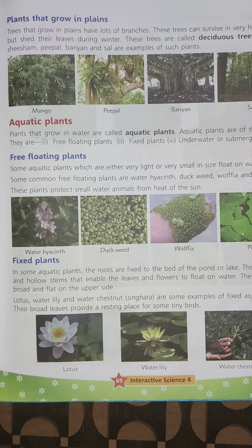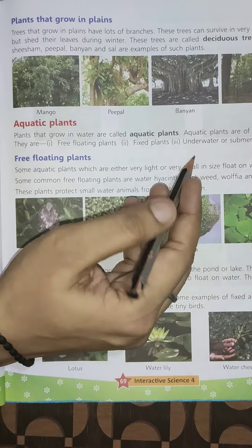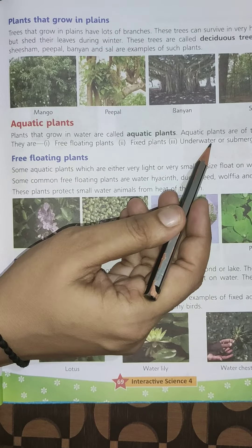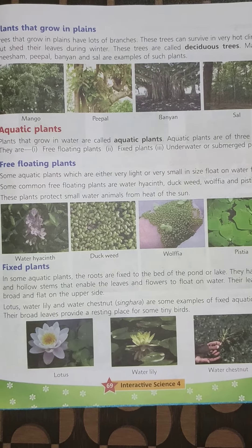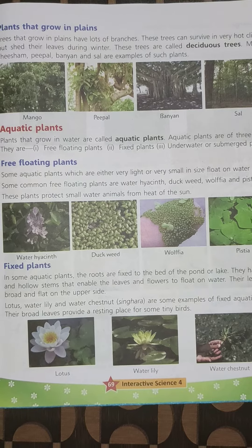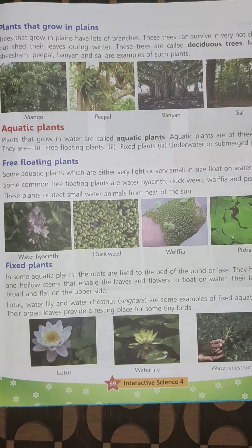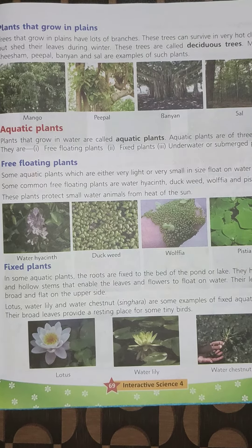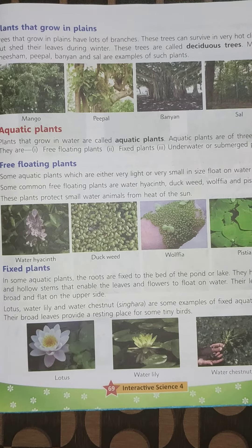They are free floating plants, fixed plants, and underwater or submerged plants. What are free floating plants? Some aquatic plants which are either very light or very small in size float on water freely.